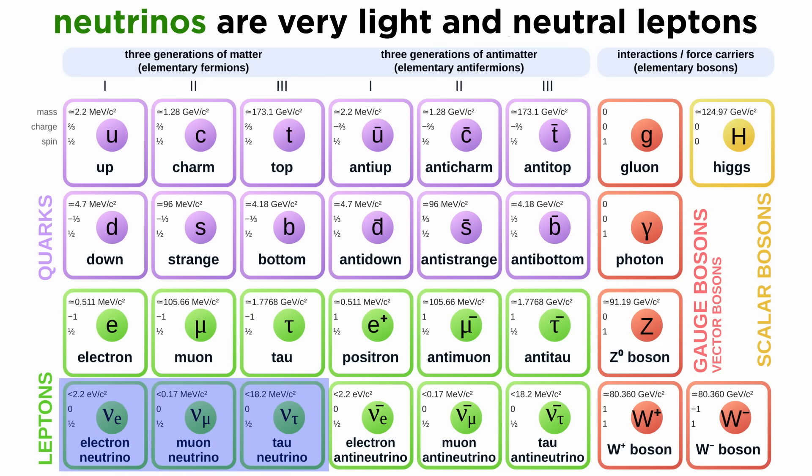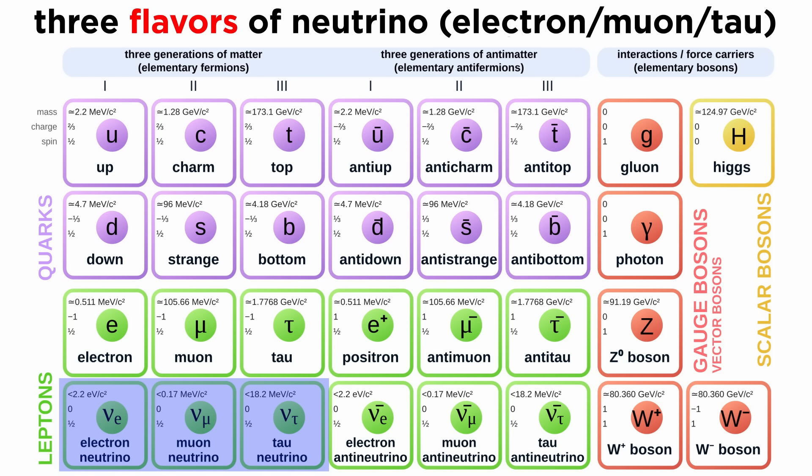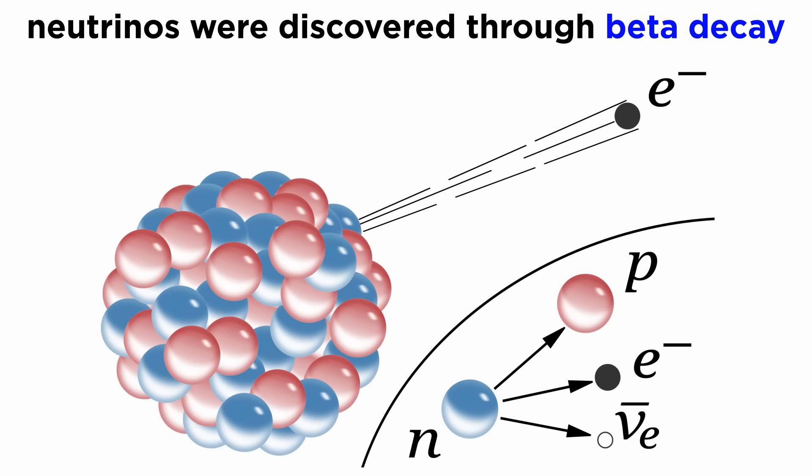The final type of lepton remains one of the more mysterious particles in the standard model. The neutrino is an extremely light and neutrally charged lepton with three flavors, the electron neutrino, the muon neutrino, and the tau neutrino. It was first discovered because of a range of energies produced from beta decay, a process whereby it was believed that a proton or neutron emitted a positron or electron.